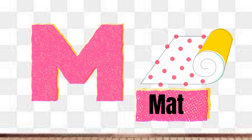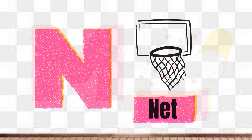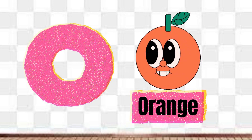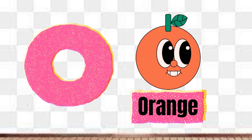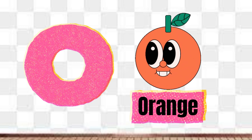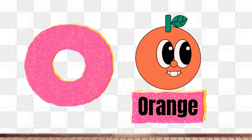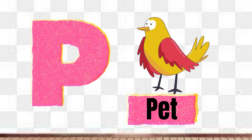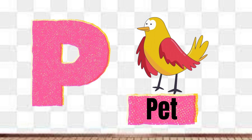M is for Mat, M-M-Mat. N is for Net, N-N-Net. O is for Orange, O-O-Orange. P is for Pet, P-P-Pet.